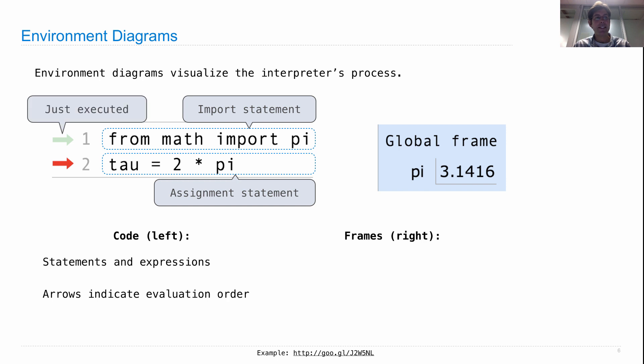The arrows indicate the evaluation order. The gray one says this was just executed. And the red one says this is next to execute. It hasn't happened yet. Frames on the right show bindings between names, pi as a name, and values. There's a name, there's a value.